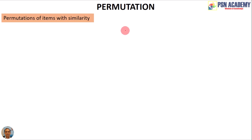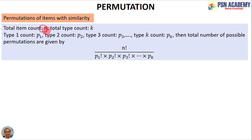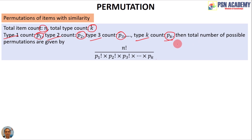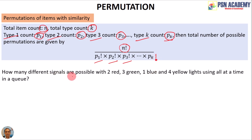Now, permutation of items with similarity: suppose the total item count is n and there are k types of items. Type 1 has p1 pieces, type 2 has p2 pieces, up to type k with pk pieces. The total number of arrangements when all items are taken at a time is n! / (p1! × p2! × p3! × ... × pk!).